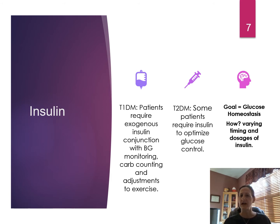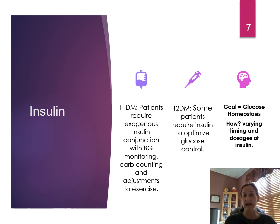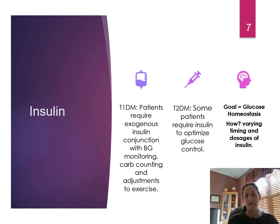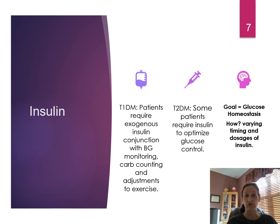Patients with type 2 diabetes most will require diet and exercise changes and are put on an oral hypoglycemic agent. Some who become insulin resistant and do not respond to oral hypoglycemic agents are then put on insulin to optimize glucose control.